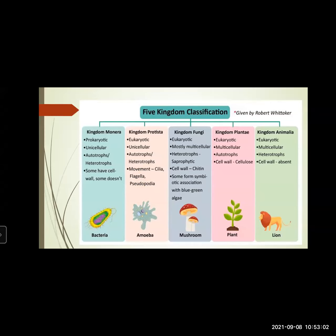Kingdom Fungi: they are eukaryotic, mostly multicellular. They are heterotrophs, saprophytic in nature. Their cell wall is made up of chitin. Some form a symbiotic association with blue-green algae. Fungi forms a symbiotic association with blue-green algae where they help each other — one is providing the nutrition, the other is providing the protection. That is called symbiotic association.